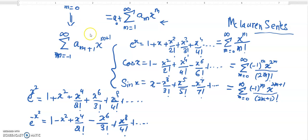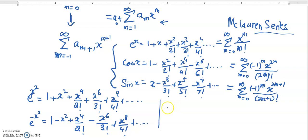Another property we can see is that we can also take the derivative of the power series. For example, the power series of e^x — if I take the derivative of that, we already know it is e^x. So for the series, we should also get the same answer.